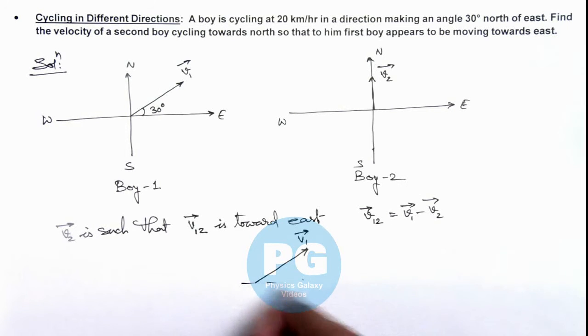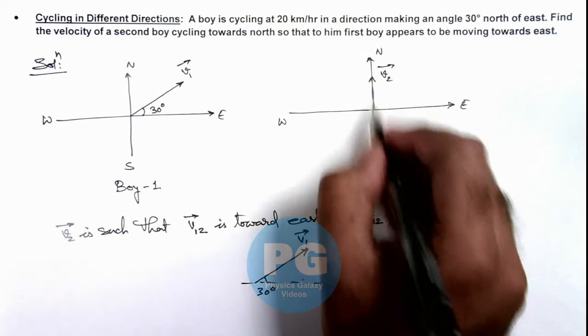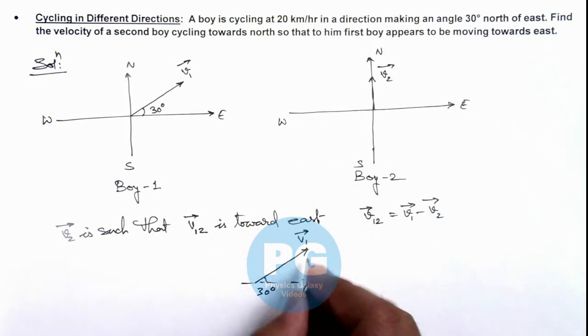That is at an angle 30 degrees to the direction of east, and minus v2 is opposite to the north direction, that is towards south.